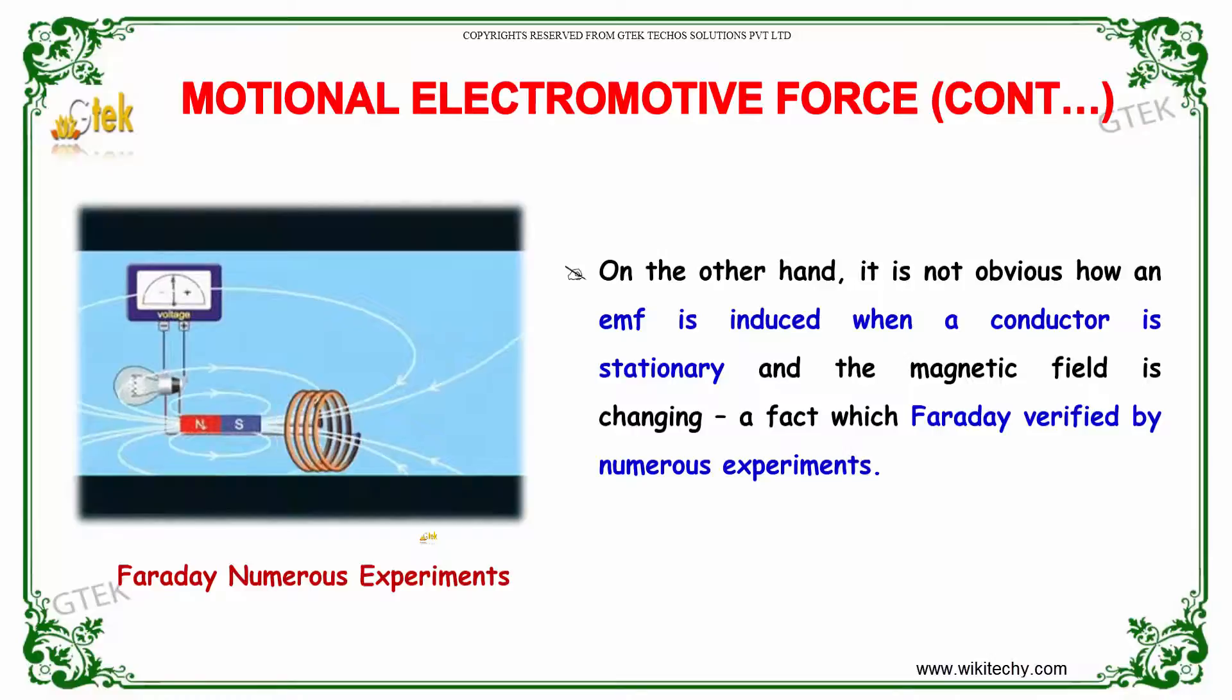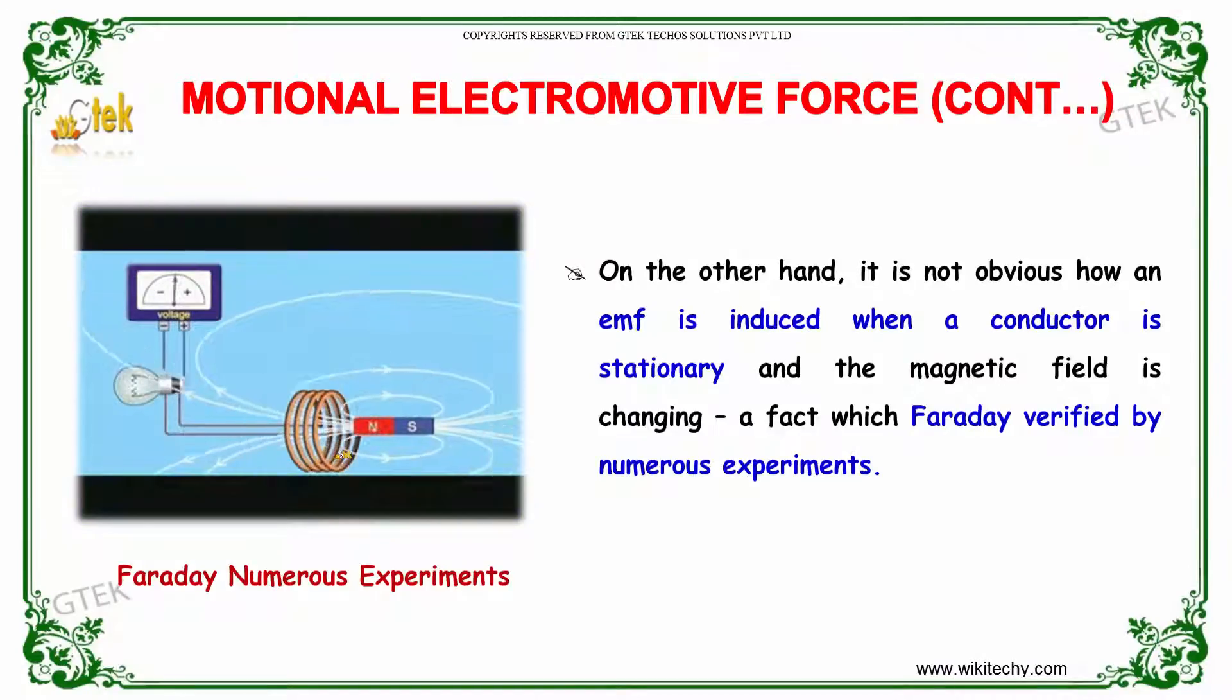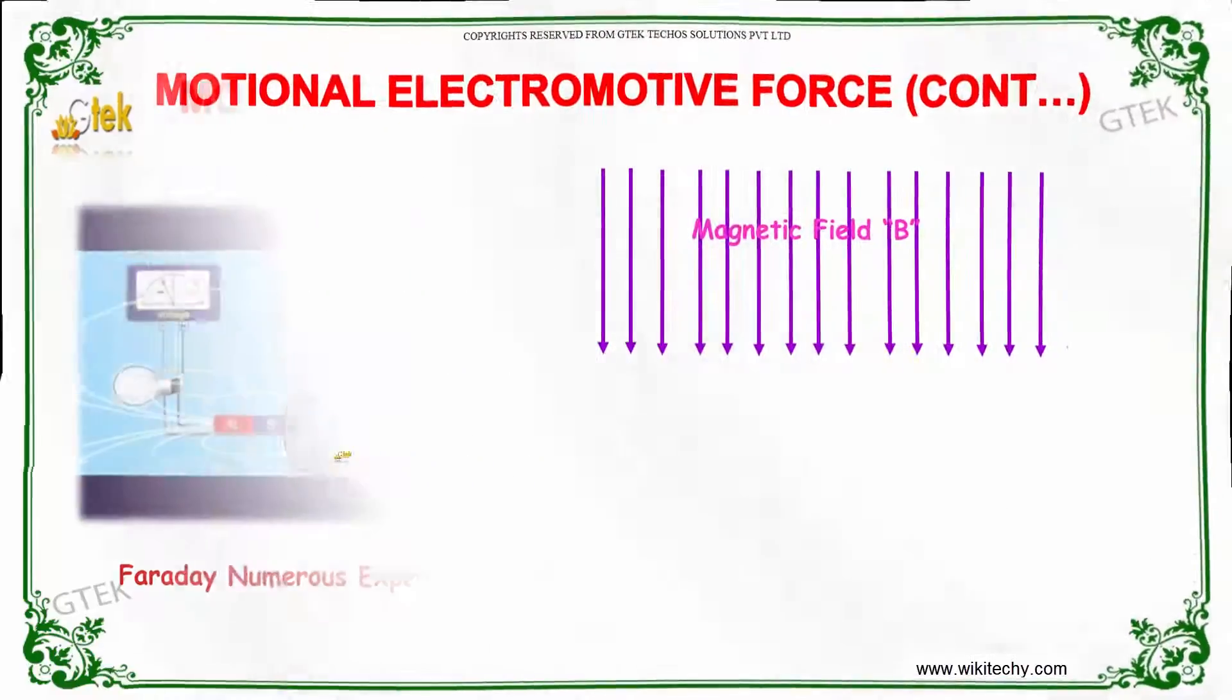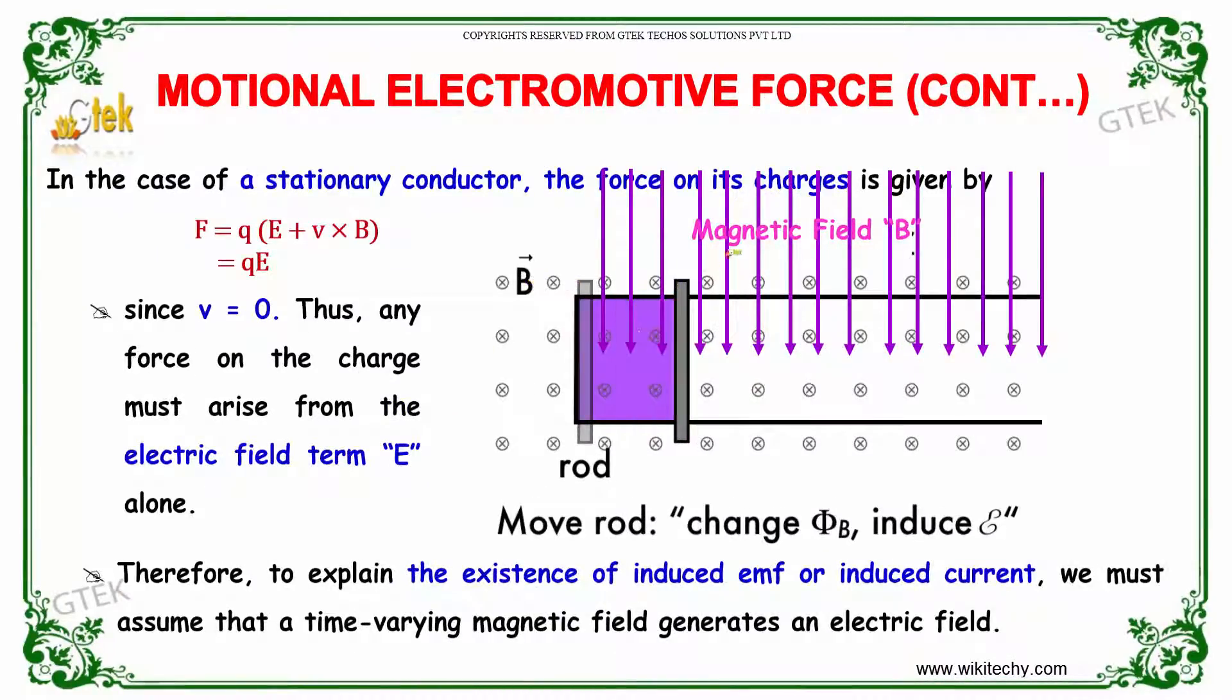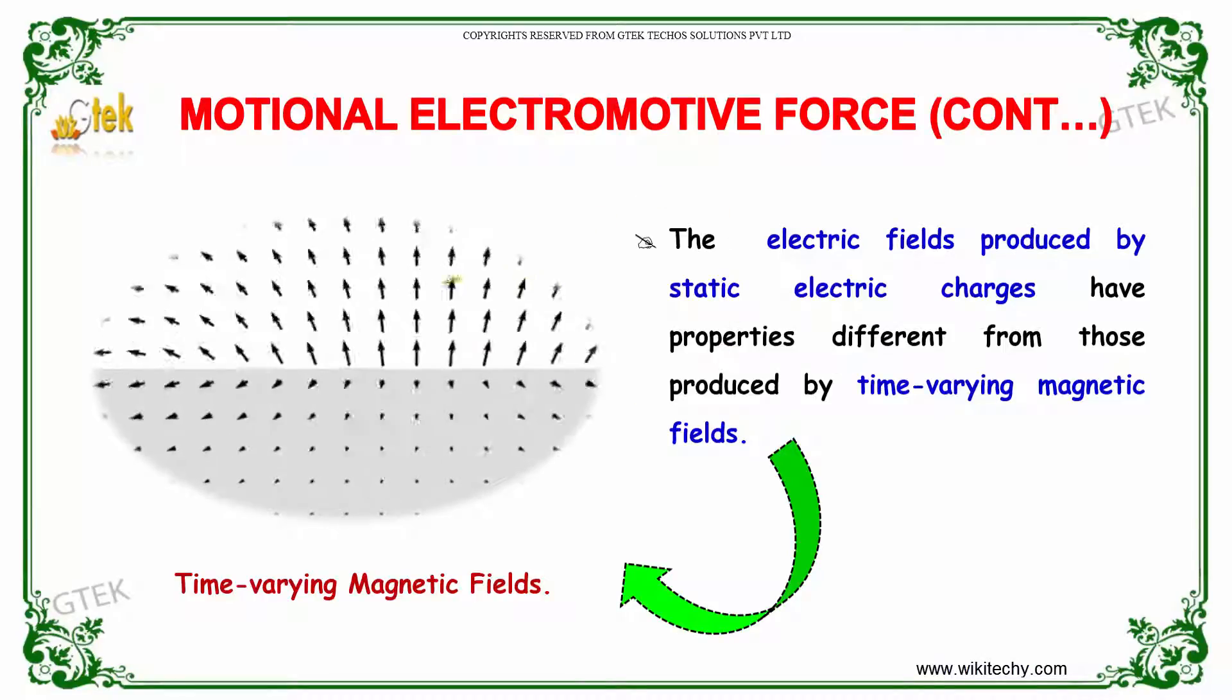On the other hand, it is not obvious how an EMF is induced when a conductor is stationary and the magnetic field is changing, a fact which Faraday verified by numerous experiments. In the case of stationary conductor, the force on its charge is given by F equals Q into E plus V into B. Considering V equals zero, this becomes Q into E. Any force on the charge must arise from the electrical field term E. Therefore, to explain the existence of induced EMF or induced current, we must assume that a time-varying magnetic field generates an electrical field. The electrical field produced via static electrical charges will be having properties different from those produced by time-varying magnetic fields.